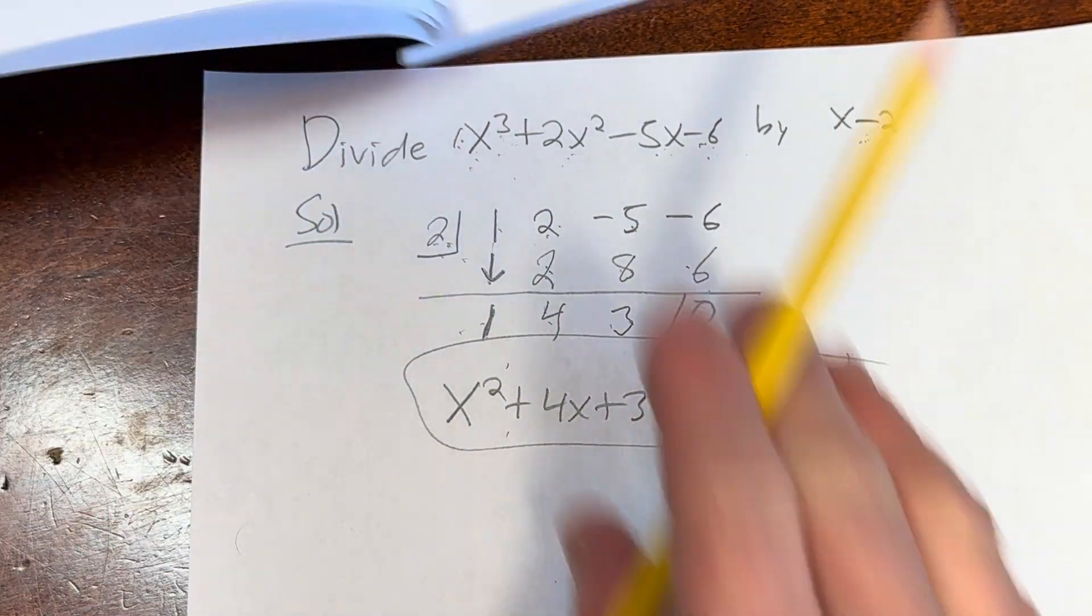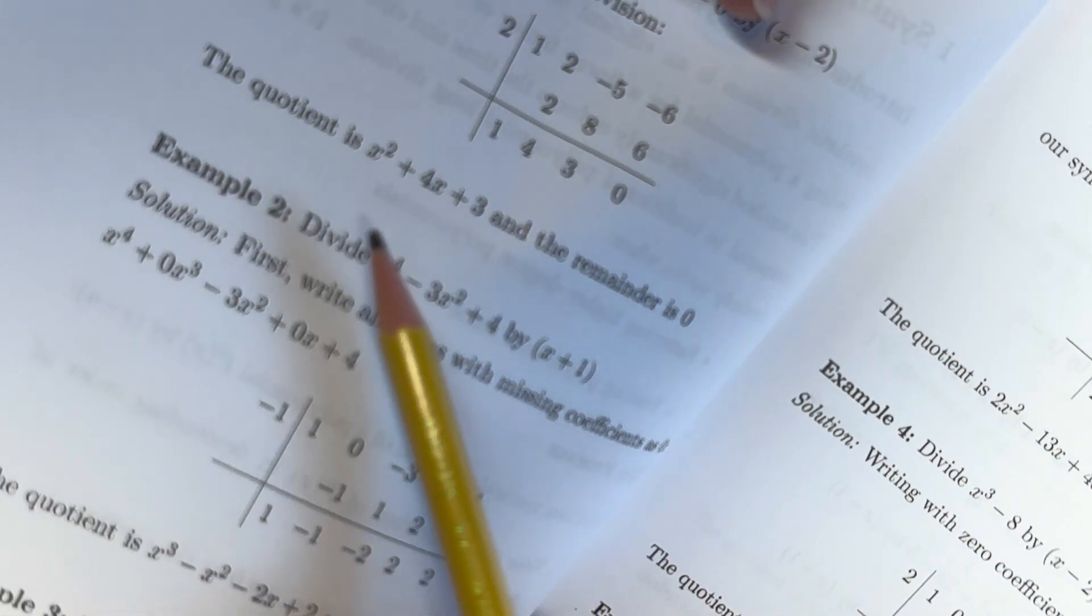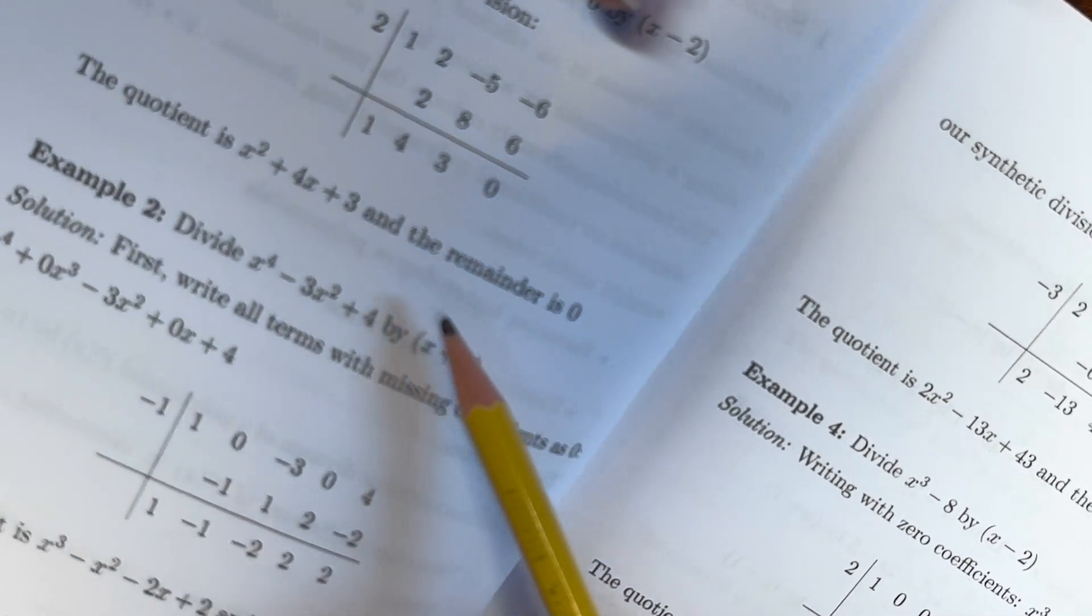Let's check our answer. This is example 1 from Pre-Calculus for Legends. And yeah, it looks like the quotient is x squared plus 4x plus 3, and the remainder is 0.